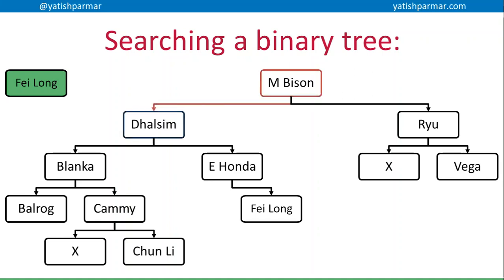Now if f is smaller than m, I'm going to follow the left pointer to Dhalsim. D is smaller than f, so my criteria is larger, so I'm going to go right. Once again, my criteria is larger than e, so I'm going to go right until I've found a match, so I'm going to stop.